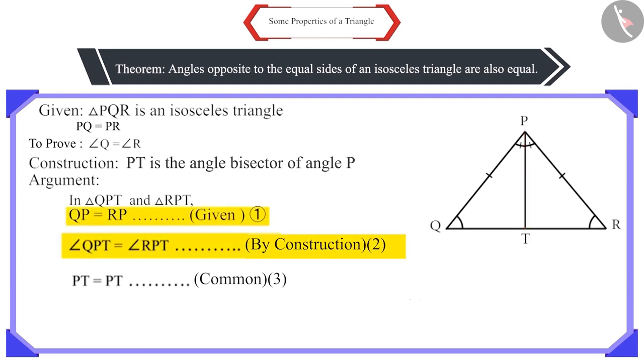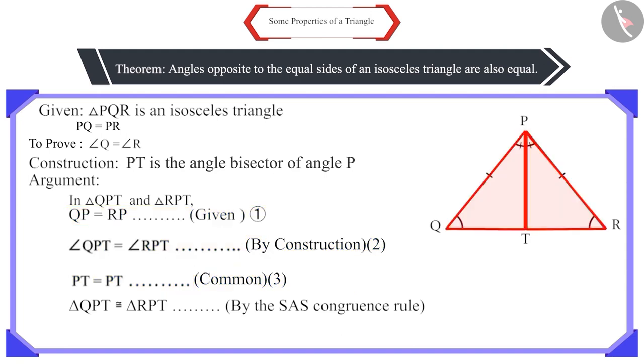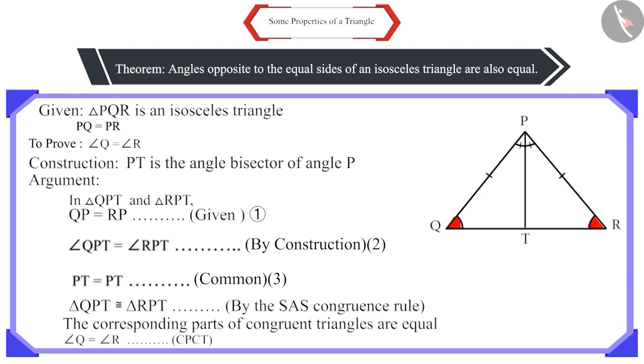Look at equations 1, 2 and 3. We can say that both these triangles are congruent according to the side angle side. That is, the SAS congruence rule. We know that the corresponding parts of congruent triangles are equal. Therefore, angle Q and angle R will be equal.